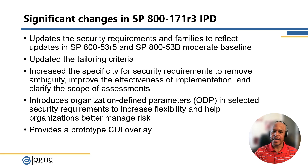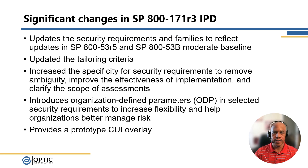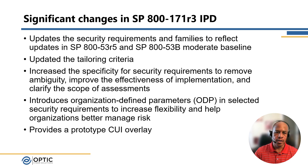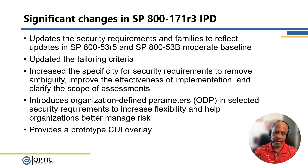There were a few significant changes in this public draft. The first is the enhancement or baselining of 171 using 853 Revision 5 and the moderate baseline from 53B as the starting point, then tailoring that baseline down to result in this draft, the 171. There's also been updated tailoring criteria — Appendix C of this public draft includes criteria showing the tailoring from the 53 baseline control and control enhancements down to the 171.